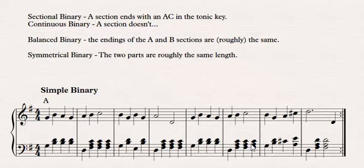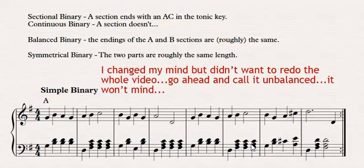A balanced binary is one where the endings of the A section and the ending of the B section are pretty much the same. So we're not looking for them to be exactly the same, just similar enough that they're reminiscent of one another. For instance, you could have the end of the A section being a different key from the end of the B section. So the notes would be different, but the shape of it and the cadence would be the same, and so we could call that balanced. If it's not the same, we don't call it unbalanced. We just sort of leave it alone.